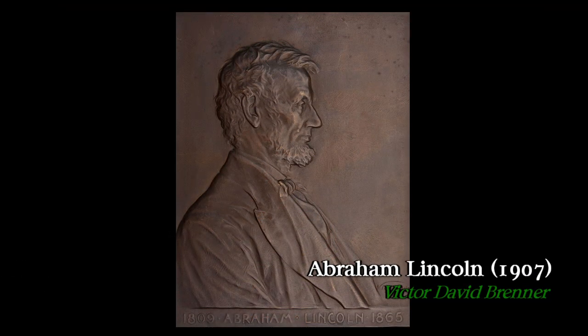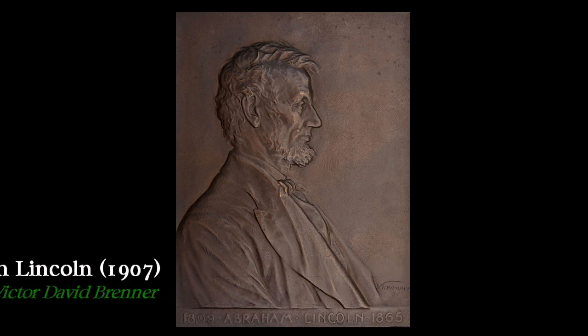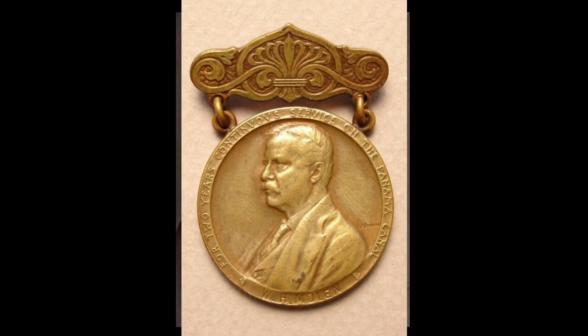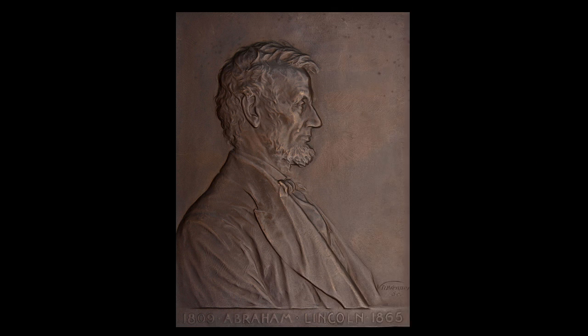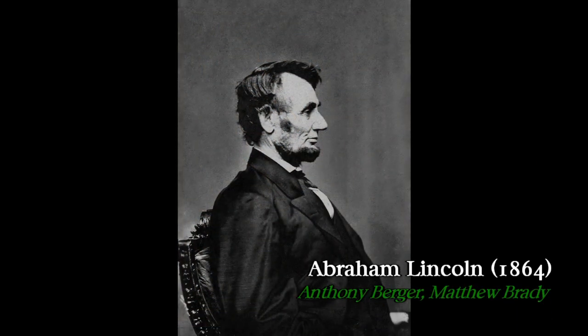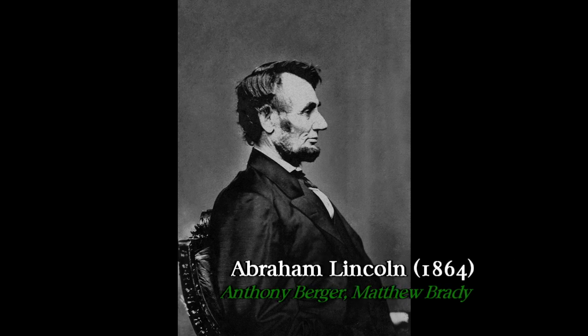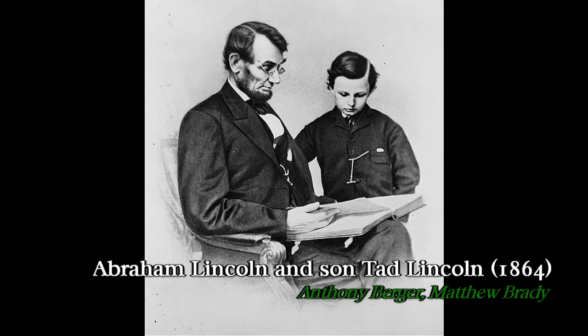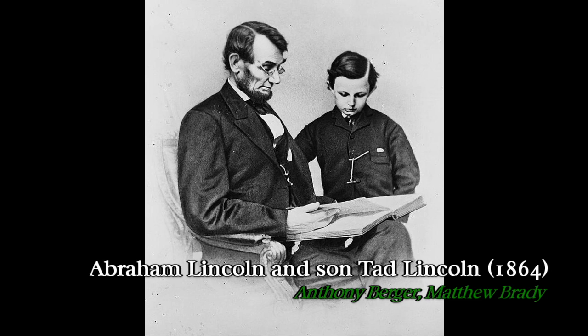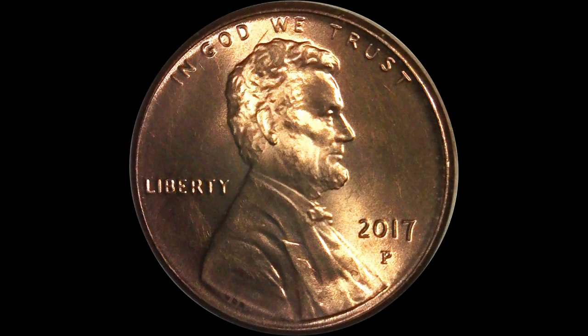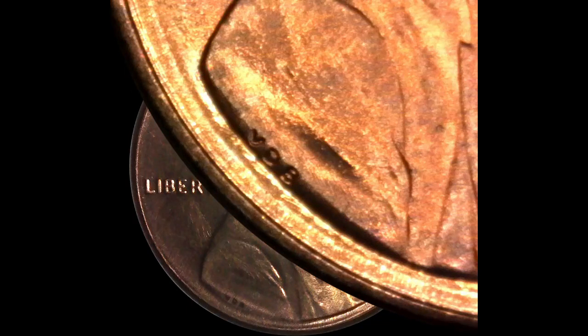Brenner had previously sculpted Lincoln for a bronze plaque which, along with sculpting his likeness for the Panama Canal Commission medal, brought him to Roosevelt's attention. It's not known exactly which photographs of Lincoln Brenner used as his inspiration for the cent, but he had previously used photographs taken by Matthew Brady for his work on the Lincoln plaque, and it's likely he used the same images for reference. His initials can be found on the front of the coin at the base of Lincoln's bust.